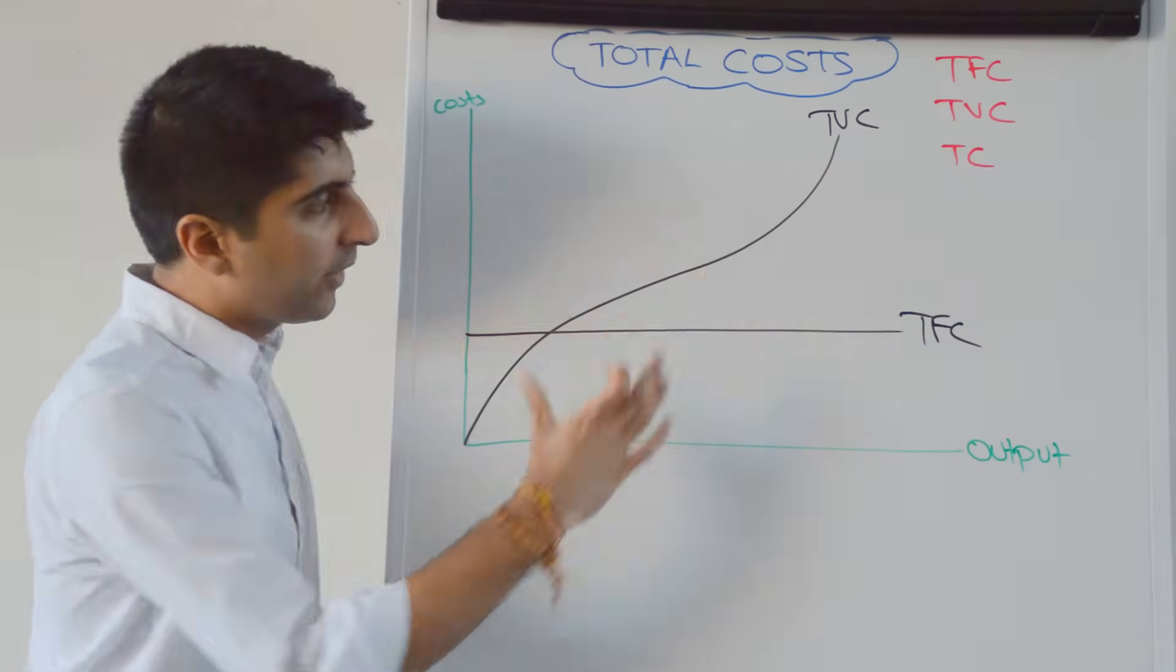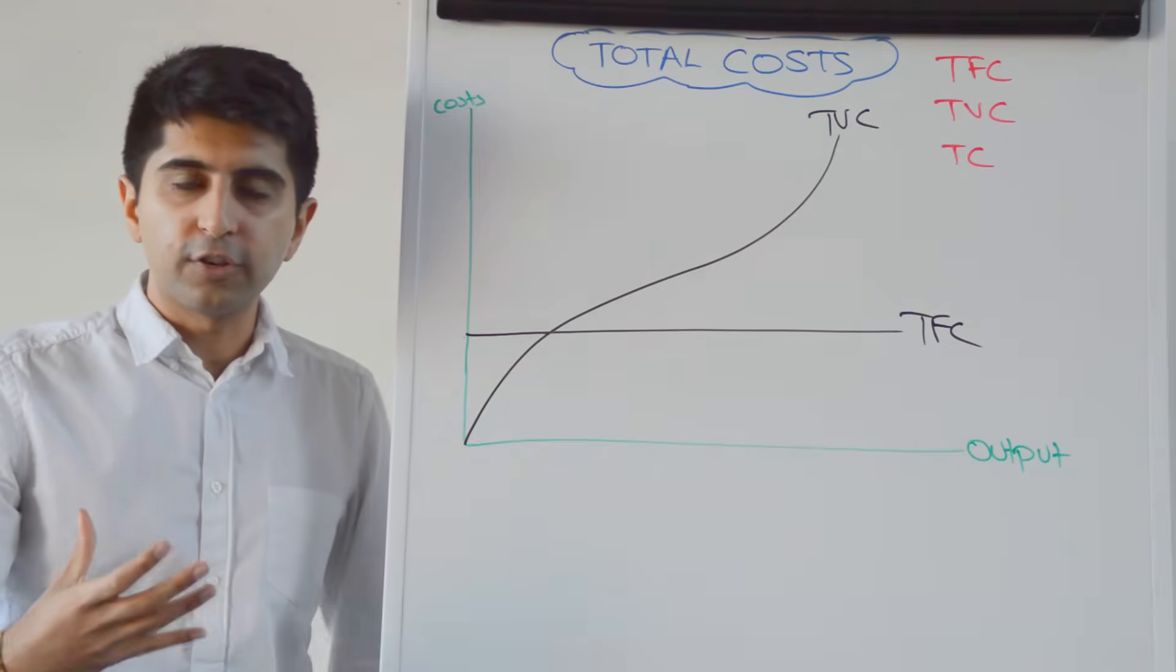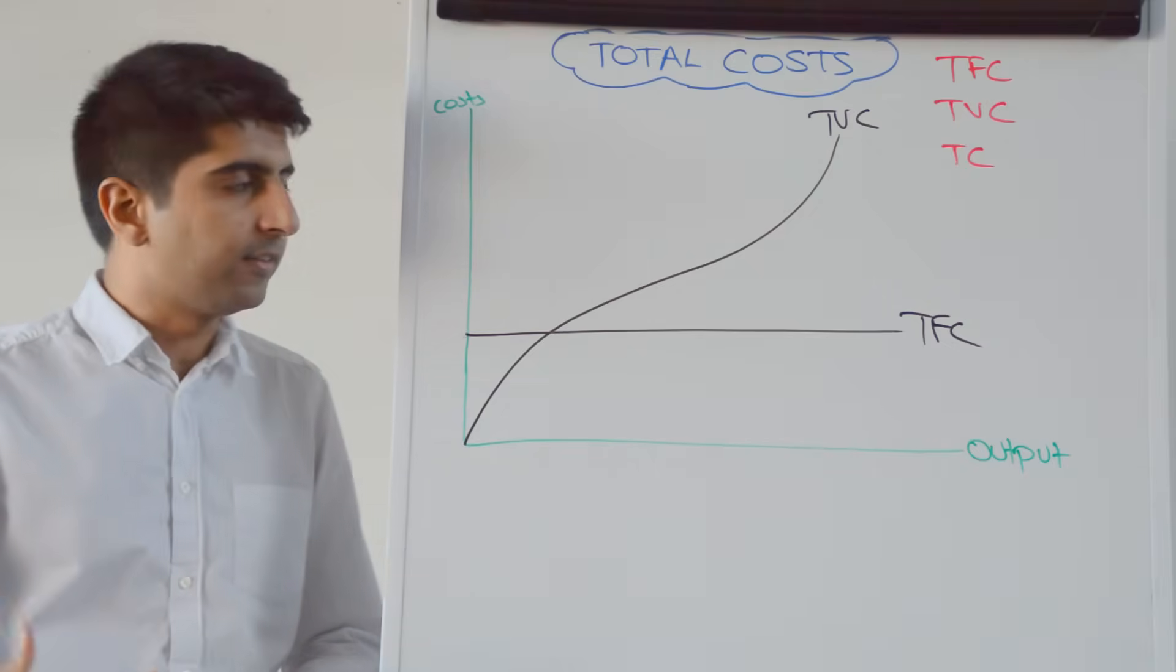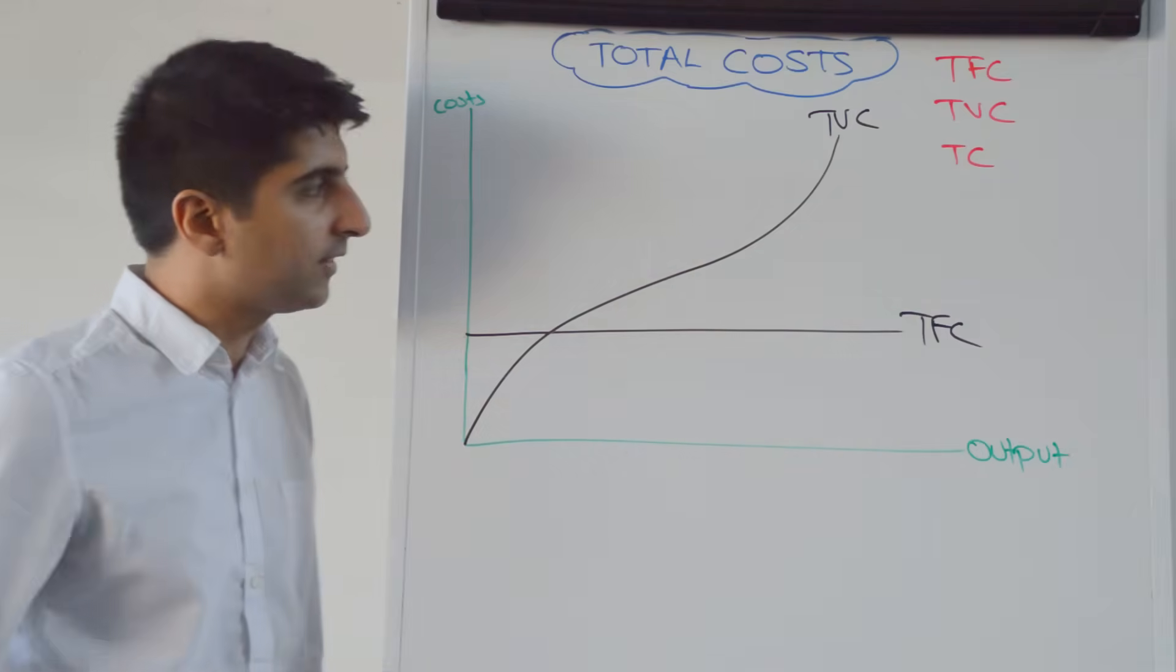Here, we see that productivity is rising, i.e., output is increasing quicker than our variable costs are, quicker than wages are increasing, which means that total variable costs do not increase that much. Output is increasing faster.